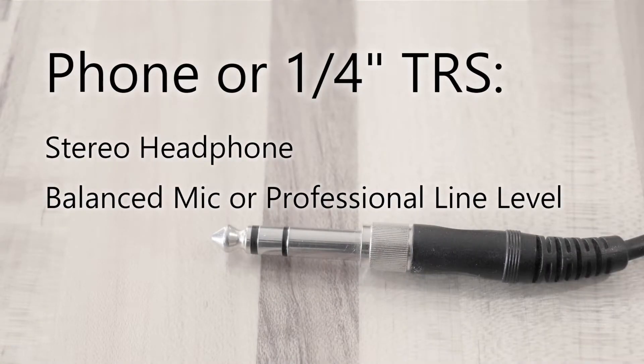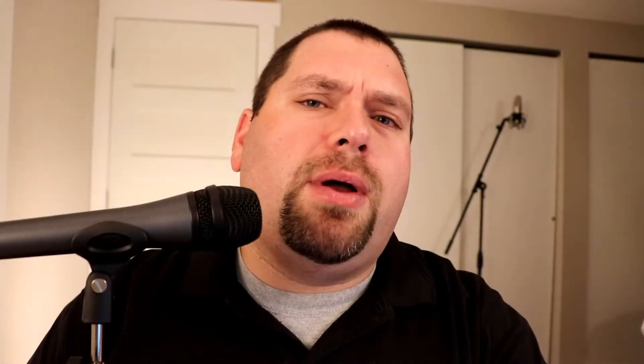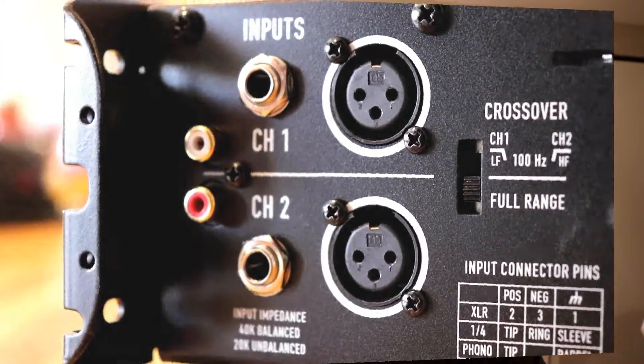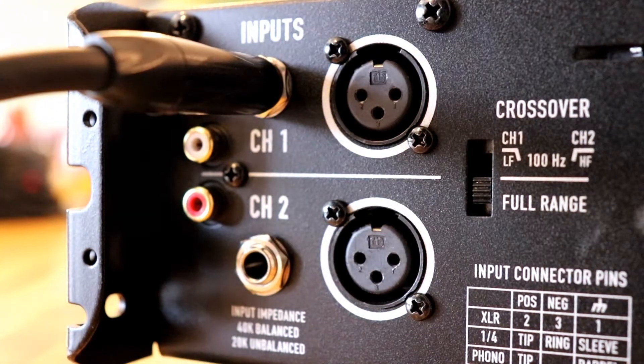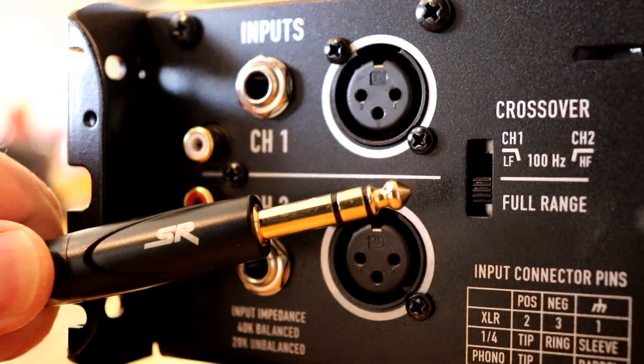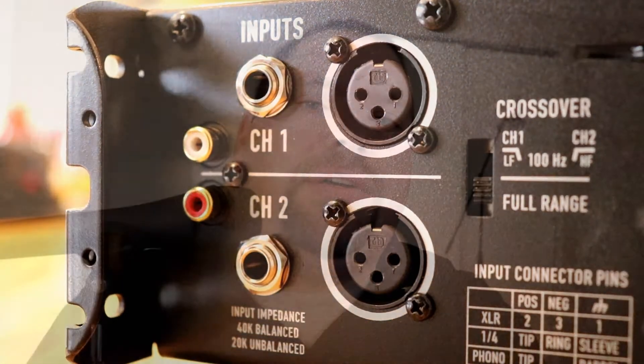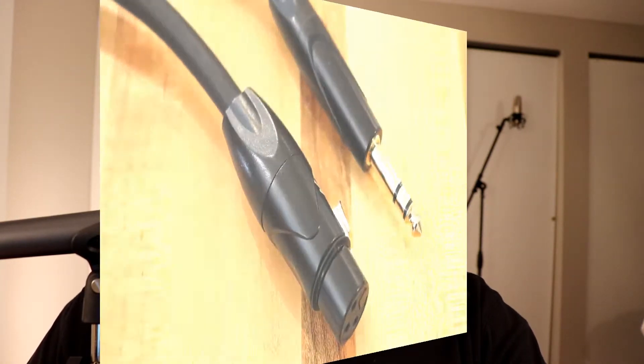Now let's talk about TRS. There's some confusion because TRS is often thought of as a stereo headphone connector — and that is true, it's used on professional stereo headphones with a left signal, a right signal, and a ground. However, TRS can also be used as a balanced mic or line level connector, with a mono signal carrying plus, minus, and ground on the three poles. You'll find TRS connections on many mixer boards as a balanced input. This XLR to TRS cable lets you send a balanced signal from the two different connector standards.